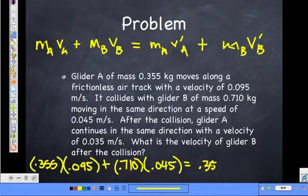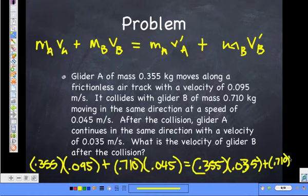Mass of A doesn't change. Same direction, so we don't have to change the sign. If the direction would have changed, we would have made it negative. But since it's going in the same direction, leave it as 0.035. So 0.355 plus 0.710 times, now we're looking for vB prime. We're looking for that value.